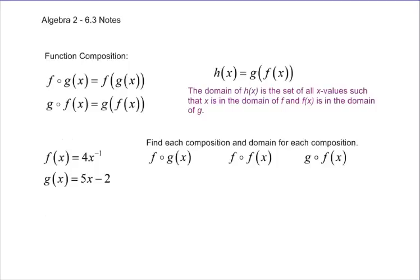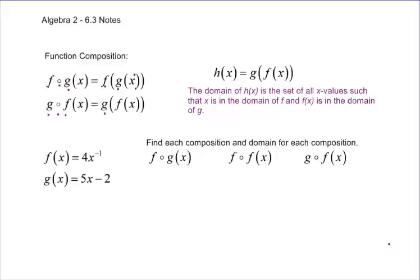Next is function composition, which can be a little confusing at first, but once you get the pattern it works out well. A function composition like f of g of x works from the inside out — you take the g function and put it inside the f function. Or you could have g of f of x, which puts f of x inside the g function. The domain is the set of all x values such that x is in the domain of f, and f of x is in the domain of g.